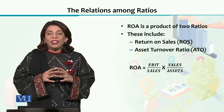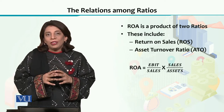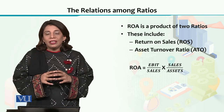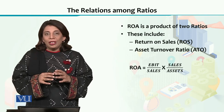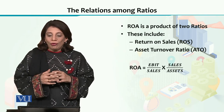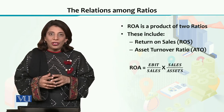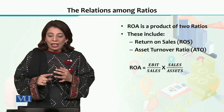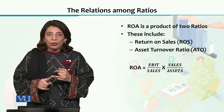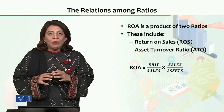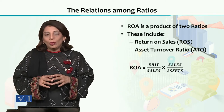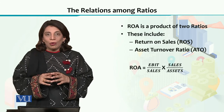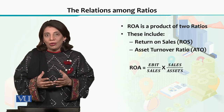Firstly, the return on assets is basically a product of two types of ratios. The first one is return on sales and the other one is the asset turnover ratio. If we multiply the return on sales with the asset turnover ratio, we get the ROA, or the return on assets.